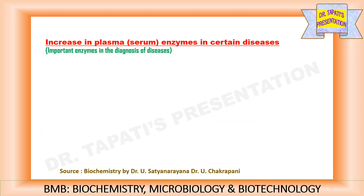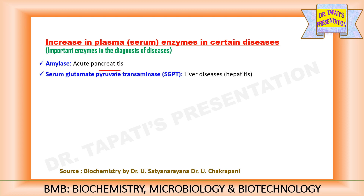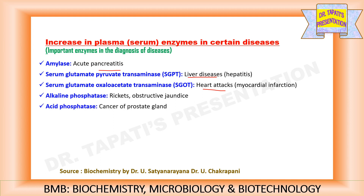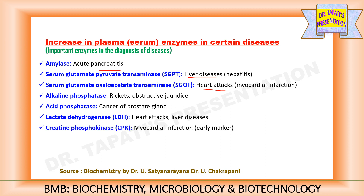The activities of few plasma enzymes are increased in certain diseases. For example, the activity of serum amylase is increased during acute pancreatitis. Whereas SGPT level is increased in liver diseases, and SGOT concentration is increased during heart attacks. Increased level of alkaline phosphatase indicates rickets or obstructive jaundice. Acid phosphatase level is increased in cancer of the prostate gland. Lactate dehydrogenase activity is increased during heart attacks or liver diseases. CPK activity is increased in myocardial infarction, which is the early marker. Whereas aldolase is the indicator of muscular dystrophy.